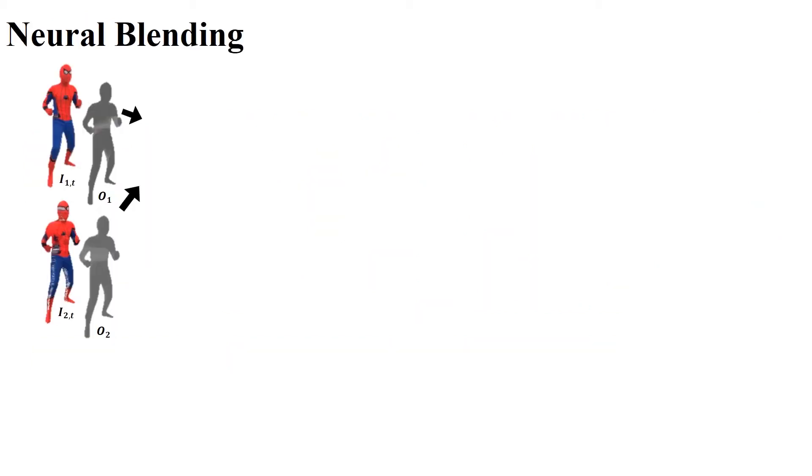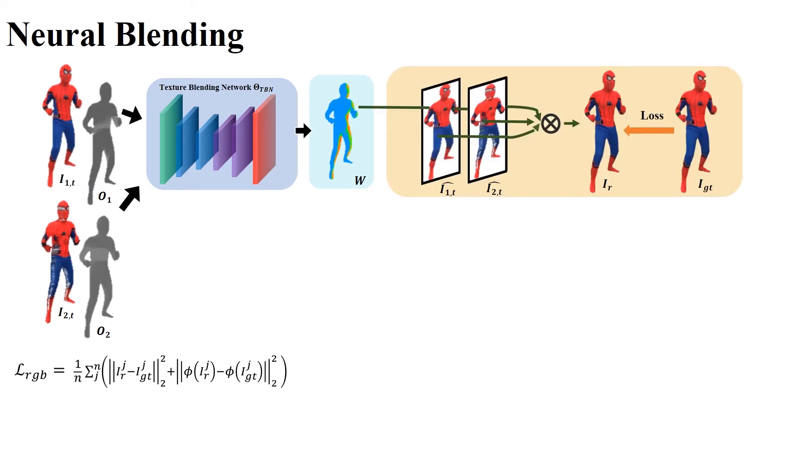After generating the depth map of the target view, we can warp the texture images from adjacent views to the target view. We can then blend the warped images into a novel view texture.